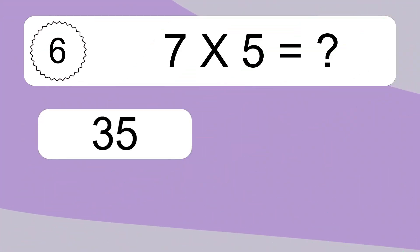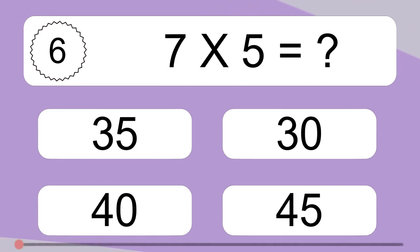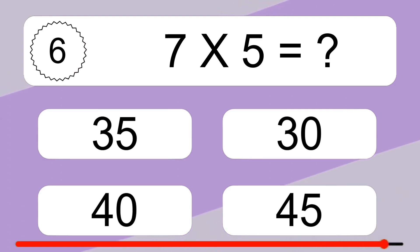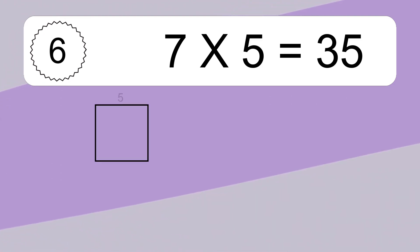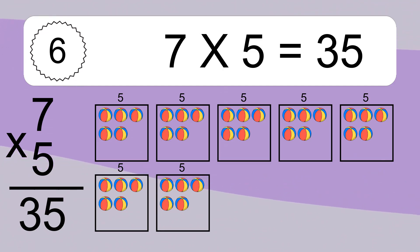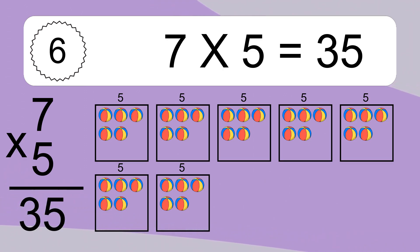7 times 5 equals what? 7 times 5 equals 35. We have 7 boxes, and each box has 5 colorful balls inside. If you count all the balls in all the boxes together, you will have 7 times 5 balls. This equals 35 balls.